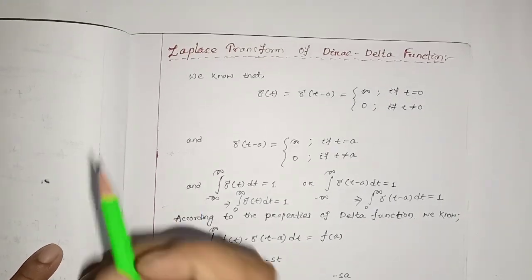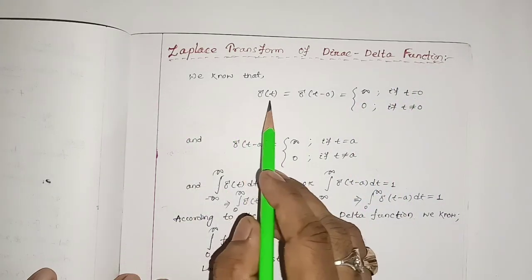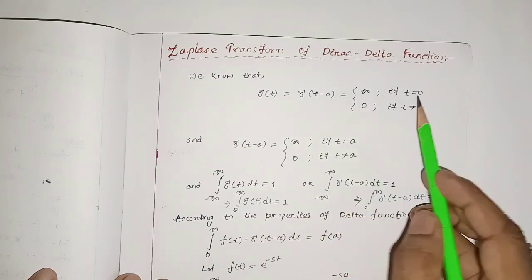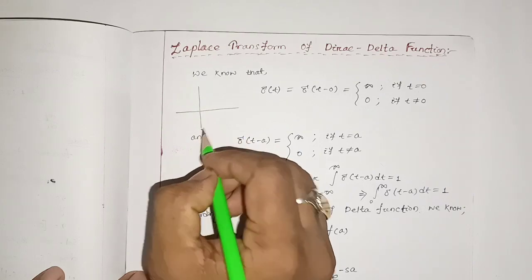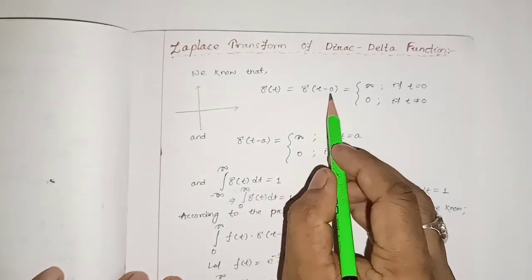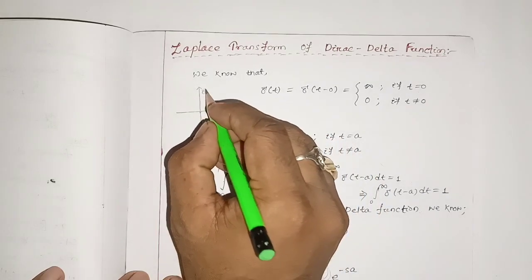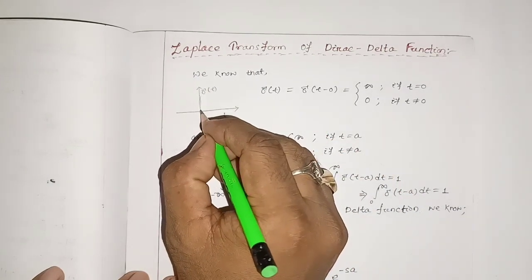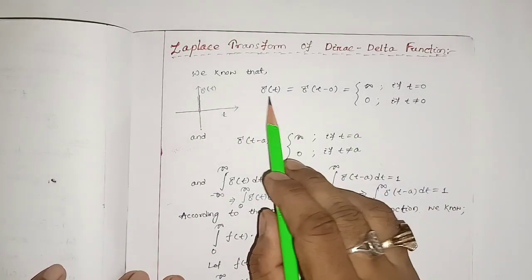Hello everyone. In this video we are going to discuss the Laplace transform of the Dirac delta function. In general, we know that the delta function δ(t), that is δ(t) minus 0, is equal to infinity if t equals 0, and 0 if t is not equal to 0. Graphically, it can be represented with x-axis and y-axis, where δ(t) exists only at t equal to 0.